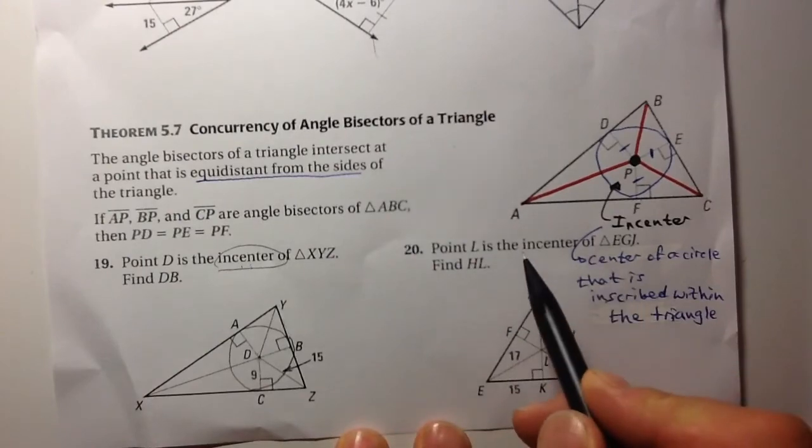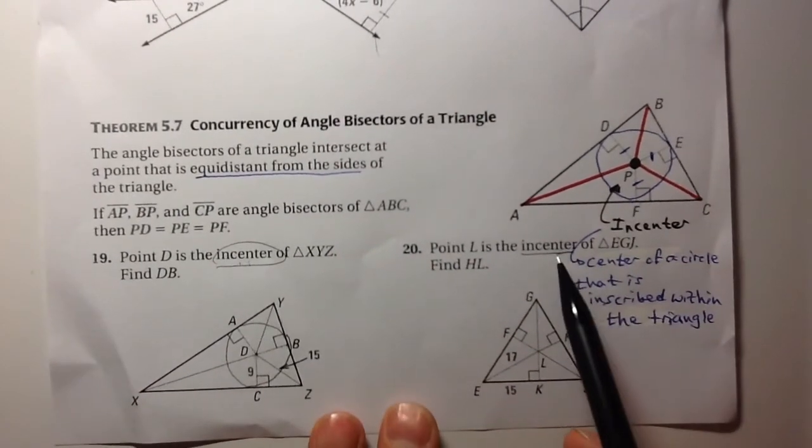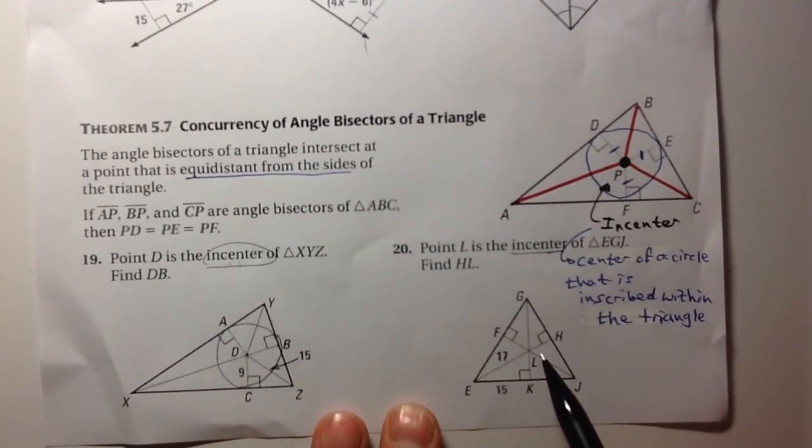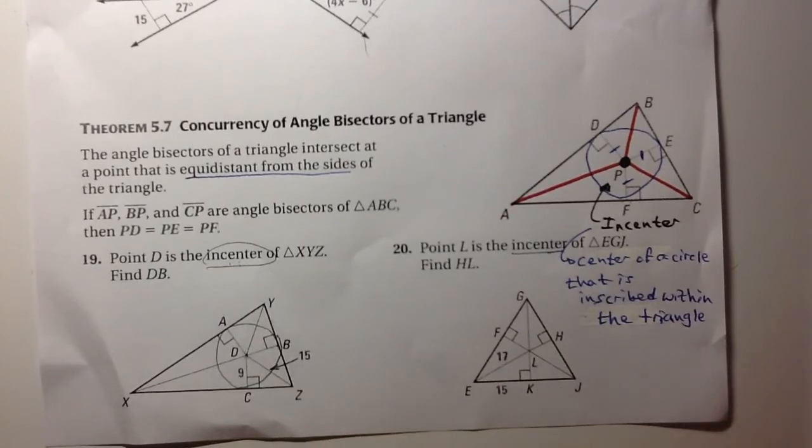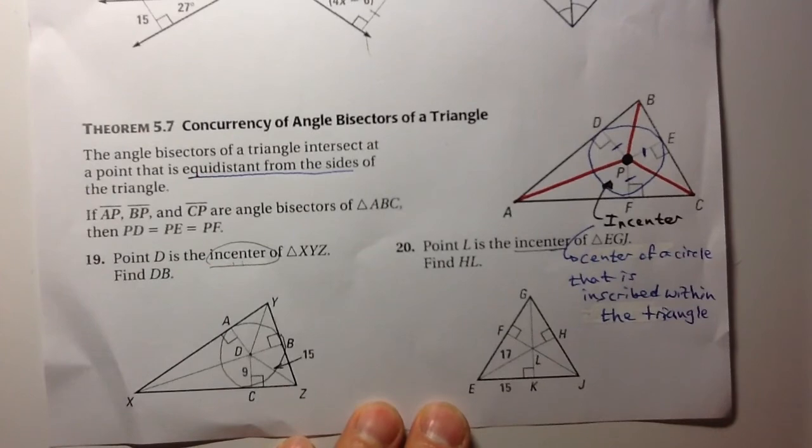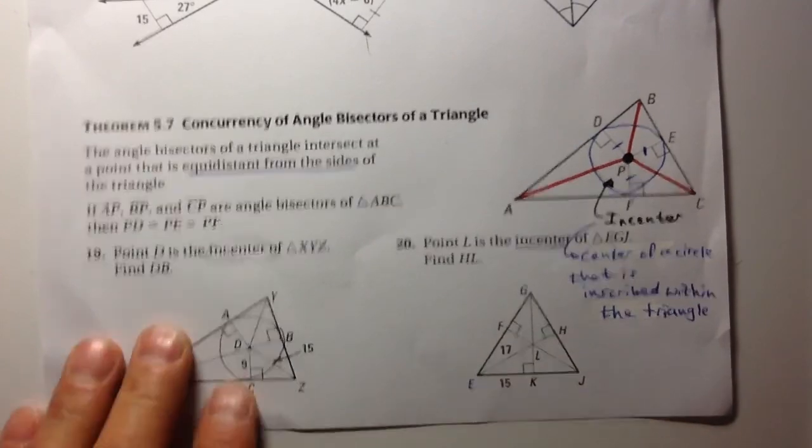And then also here with number 20, this is the incenter. So therefore it's created by the point of concurrence of angle bisectors and work from there. Okay. Nice and quick. Hope that's helpful to you.